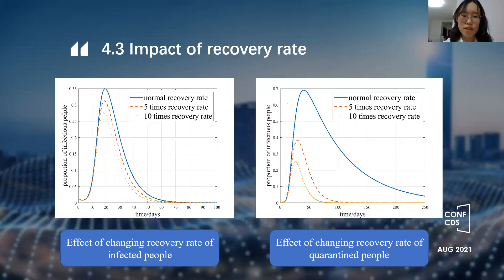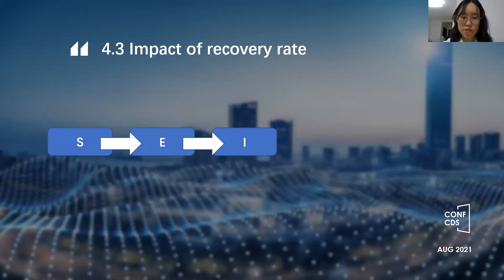We then change the recovery rate and simulate the change in the number of infected people and quarantined people. Under normal circumstances, the proportion of quarantined people will reach the peak in 42 days, accounting for about 63% of people. When the recovery rate is 5 times and 10 times, the peak value of the proportion of quarantined people changed significantly, but the peak proportion of infected people did not change significantly. That's because there are two ways for infected people to transition: recovery or quarantine.